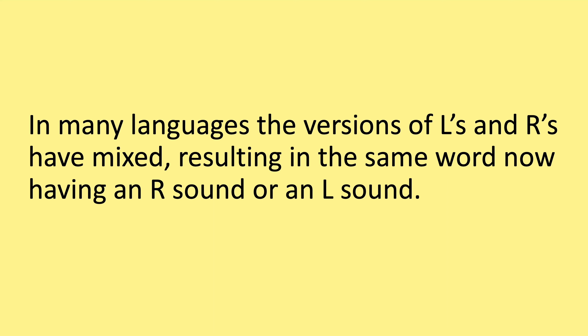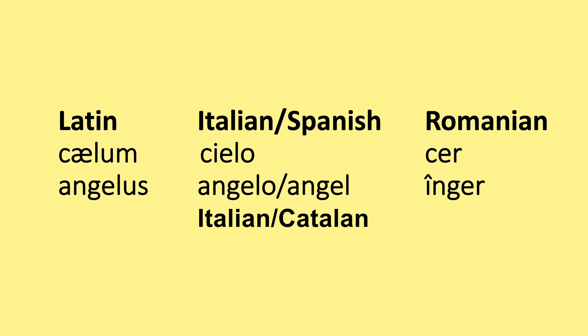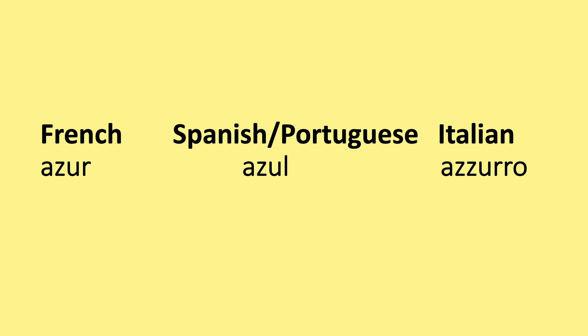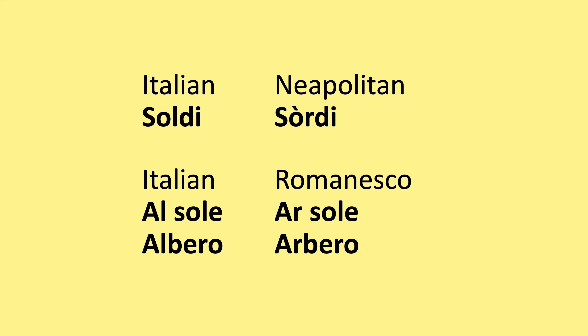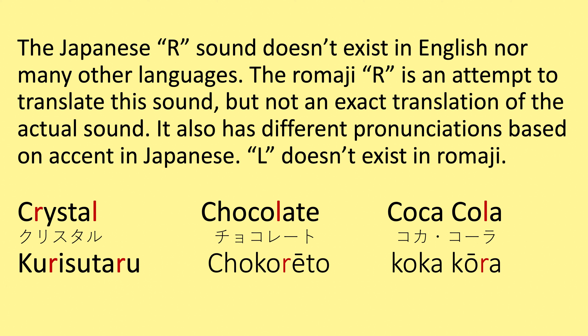In many languages, the versions of L and R have mixed, resulting in the same word now having either an R or an L sound. For example, the Latin 'caelum' resulted in Italian and Spanish 'cielo', and Romanian 'cer'. The word 'angelus' became Italian 'angelo', Spanish 'ángel', and Romanian 'înger' — showing how Romanian developed L into R. Another example: across French, Spanish, Portuguese, and Italian, you find 'azur', 'azul', 'azzurra'. In some dialects of Italy, 'soldi' becomes 'sordi' in Neapolitan, 'al sole' becomes 'arsole' in Romanesco, and 'albero' becomes 'arbero'. Japanese is also well known for mixing R and L, because their phoneme doesn't coincide with our distinct R and L sounds — it's about how we listen and hear things, not how we spell them.